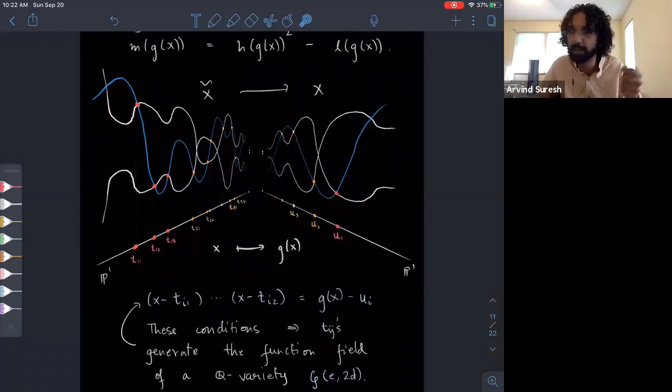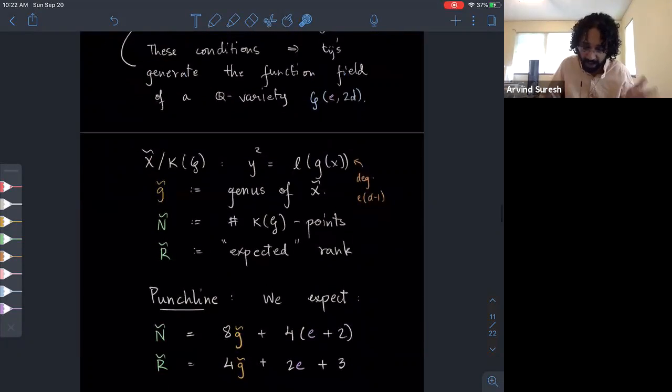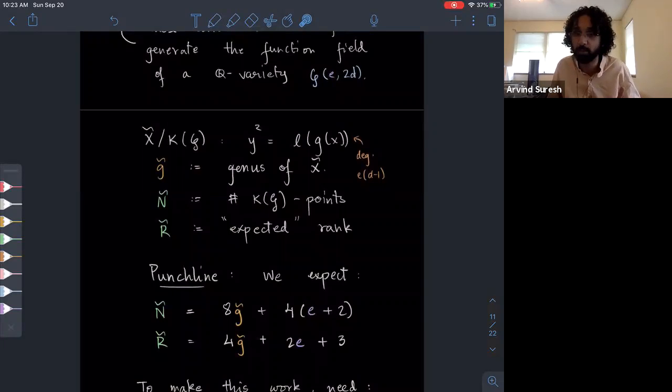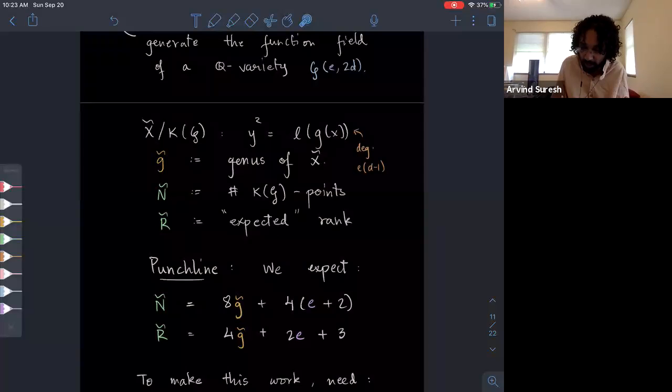So here you see this curve looks more complicated. That's my attempt to reflect the fact that the degree has gone up. So you've got a more complicated curve. The degree has gone up. I mean, the genus has gone up, but then we've also increased the number of points. So have we gained anything by doing this? We actually have. I'm going to denote this curve X tilde. This is degree E times D minus one now. So the genus is G tilde. The number of points is N tilde. And the expected rank is R tilde. The punchline is what we gain by doing this is the following: the number of points we get now is 8G tilde plus now it's 4 times E plus 2. Here, E is the degree of the map that we applied, the G of X. So if G of X is degree one, that means we're not doing anything. And then as expected, we get 4 times 1 plus 2, we get 8G plus 12. And then here we get 4G plus 5. That's just what you get from the baseline method that I described above.